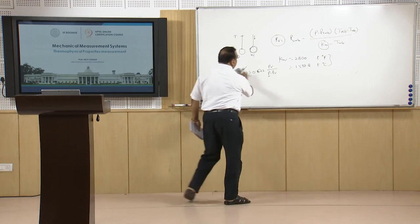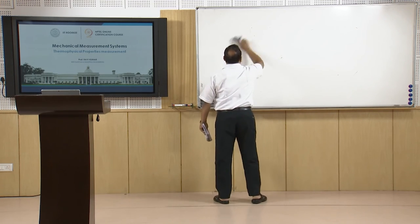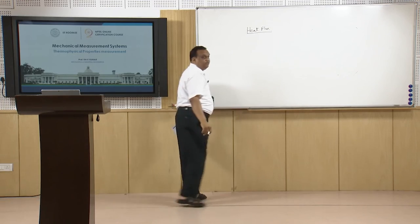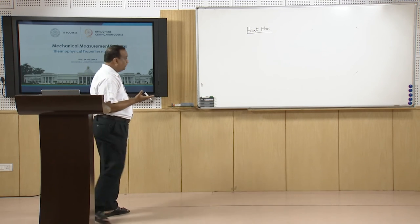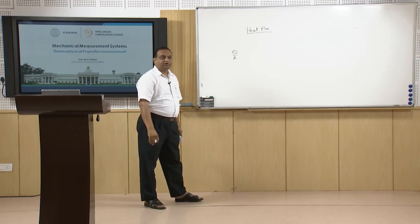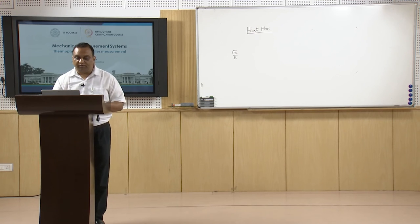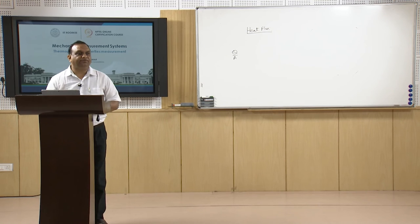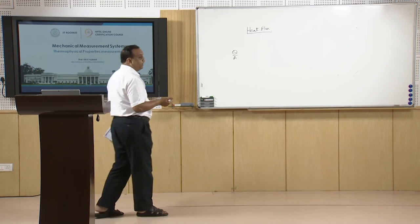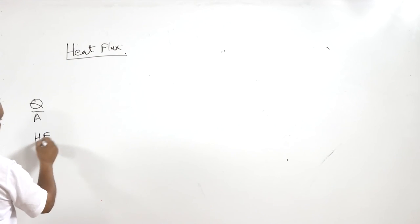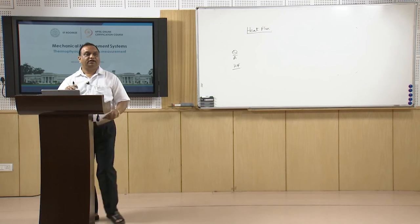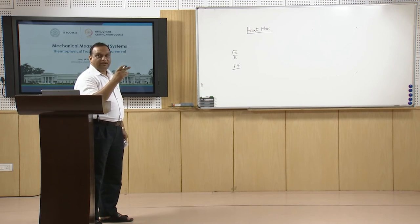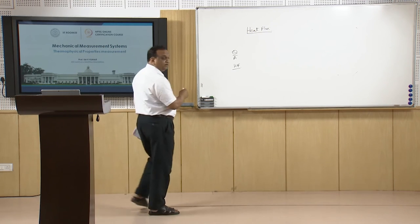The last topic is heat flux measurement. Heat flux is sometimes required to be measured directly using heat flux sensors, rather than calculated as Q/A. For example, to measure heat transmission to walls in the case of fire, heat flux sensors can be embedded at different locations in walls or ceiling of a room.